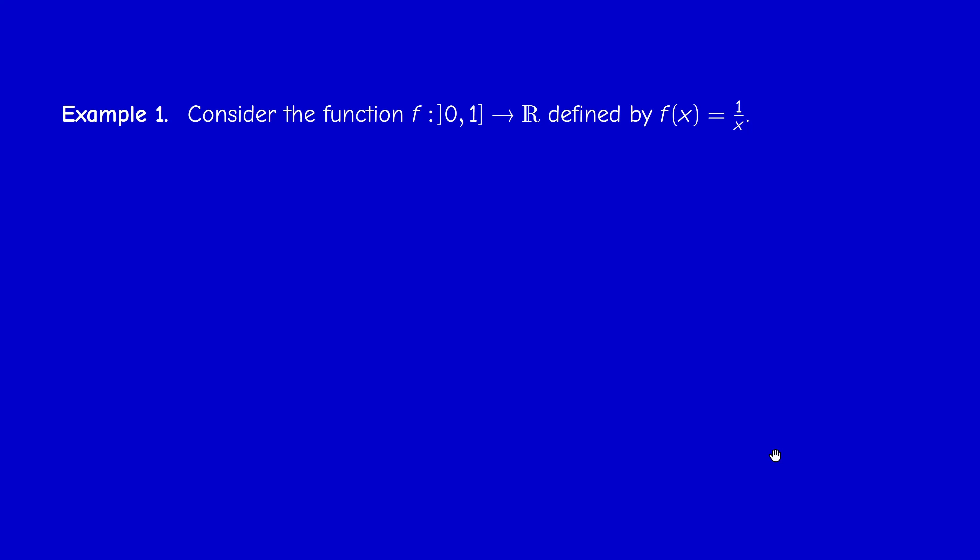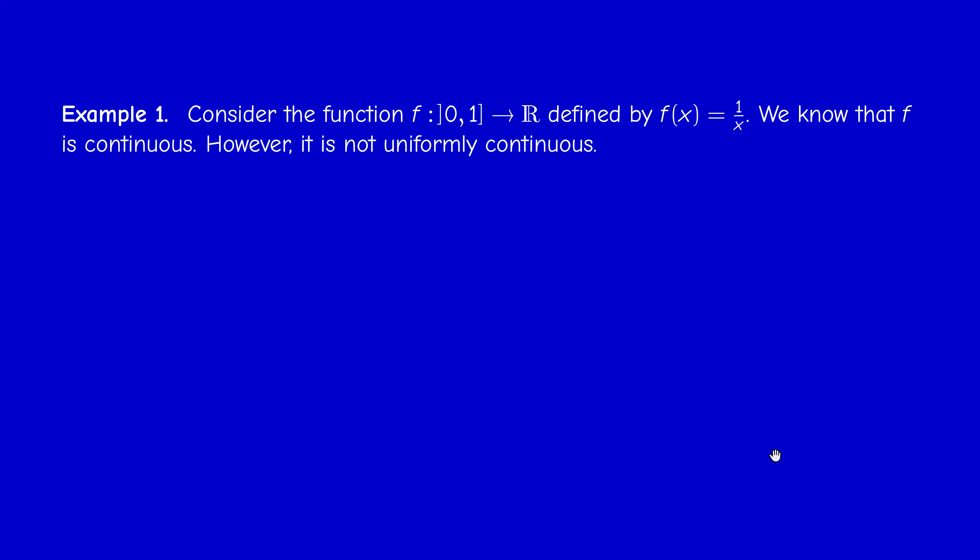A uniformly continuous function is, of course, continuous, but the converse is not true — here's an example. Consider the function 1 over x on the interval (0, 1), open at 0. We know that f is continuous, but it's not uniformly continuous. We negate the condition of uniform continuity.